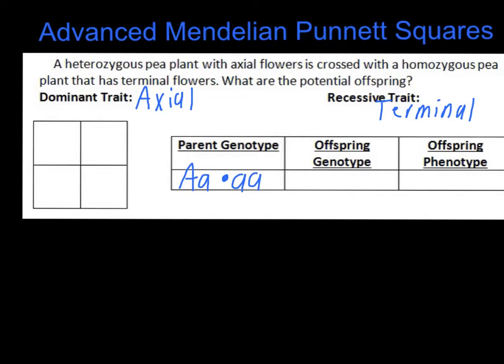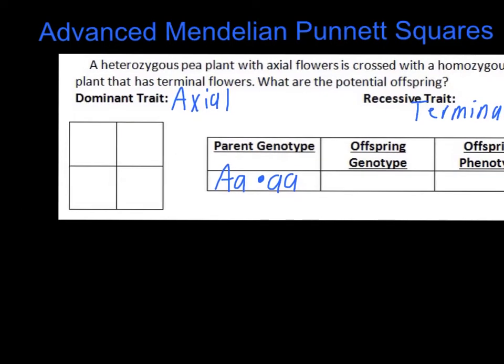The next step is to put things in the Punnett square. I always take the first parent and put that one on top of the chart, and the second parent on the side. I do recommend that you fall into a pattern with this — the more you develop a routine to answering these problems, the easier it's going to make things for you. So put the first parent along the top of the Punnett square and the second parent down the side, then figure out where things intersect and draw them in.